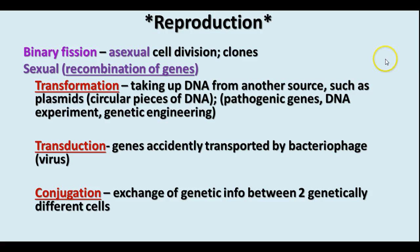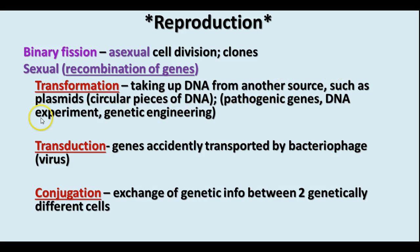That's the main kind of cell division — asexual cell division, binary fission. There's also sexual reproduction where you have some recombination of genes; it's not really sexual reproduction as we would think of it, but it does involve recombination. There are three main types. Transformation is when DNA can be taken up from another source, such as a plasmid from another bacterium, and this is important — we use this in DNA experimentation and genetic engineering.